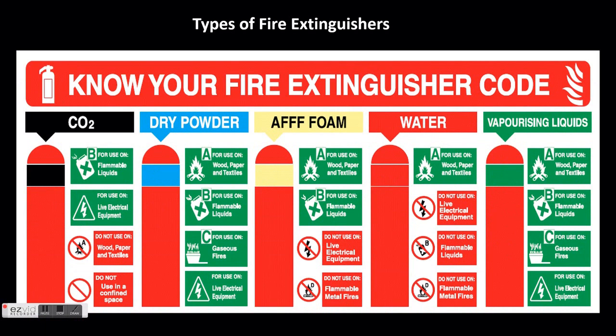Types of fire extinguishers: Carbon dioxide extinguishers are rated for Class B and C fires. If used in confined areas, they will create oxygen deficiency; they are not effective in windy conditions, can cause frostbite during discharge, and are typically not used in the roofing industry.